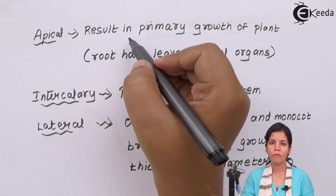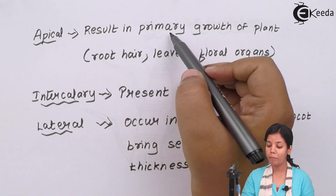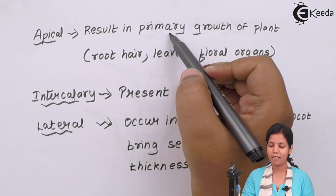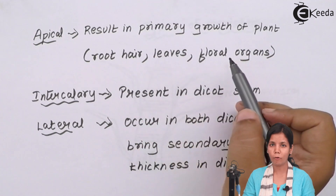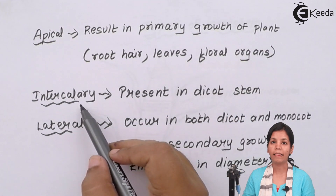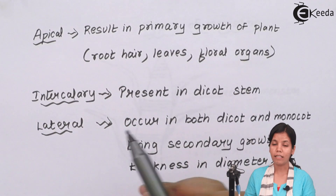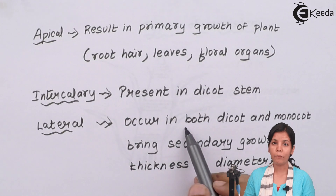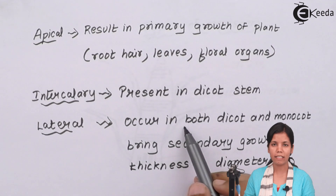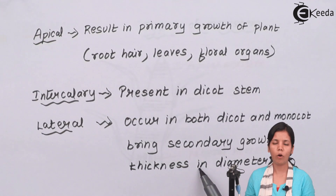The three types of meristematic tissues are: apical meristem, which results in the primary growth of the plant including root hairs, leaves, and floral organs; intercalary meristem, which is present inside dicot stems or dicot plants; and lateral meristem, which occurs in both dicot and monocot plants and brings about secondary growth — that is, the increase in thickness or diameter of the stem or bark.